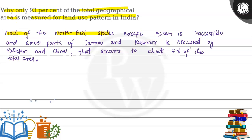Most of the Northeast states, except Assam, are inaccessible, and some parts of Jammu and Kashmir are occupied by Pakistan and China. That accounts for about 7% of the total area. The Northeast states have tropical rainforest and difficult terrain.